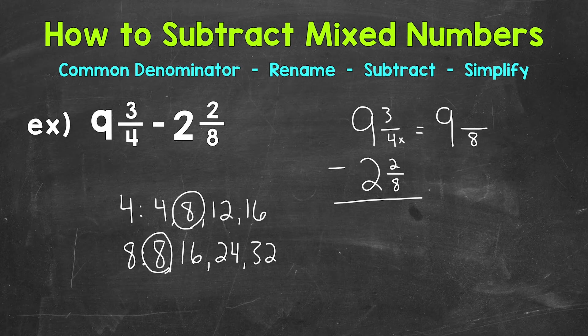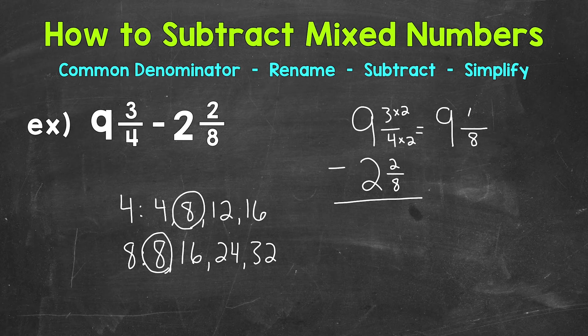4 times 2 equals 8. Now whatever we do to the bottom, we must do to the top in order to keep this equivalent. So 3 times 2 gives us 6. 6 eighths is equivalent to 3 fourths. We're not changing the value of the problem at all. We're just using equivalent fractions to rename that fraction with our common denominator.